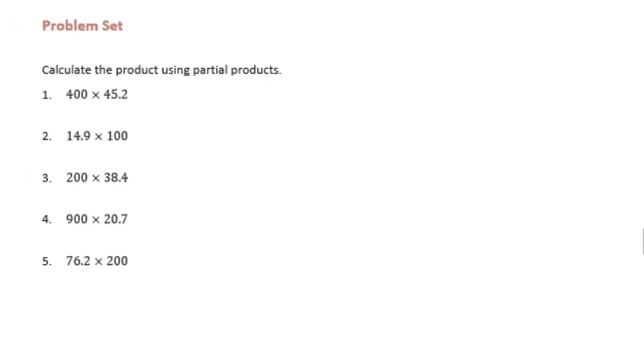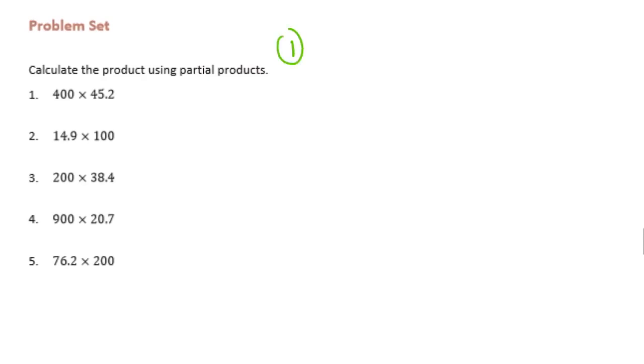Number 1, I'm going to do over up here. So number 1 is 400 times 45.2. What we're going to do is take 45.2 and split it into 45 and 0.2. So we'll have 400 times 45, and we're going to add it to 400 times 0.2. So we're doing partial products.